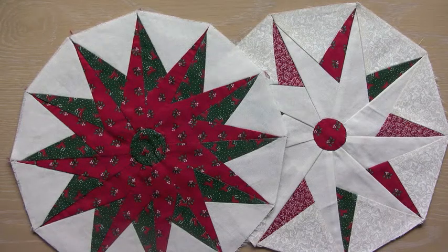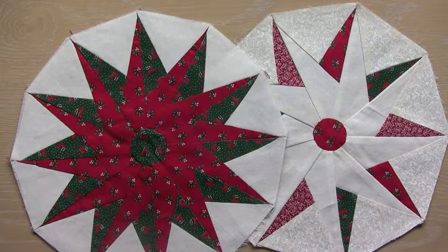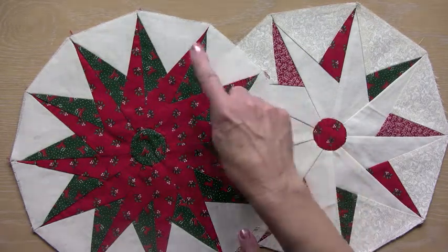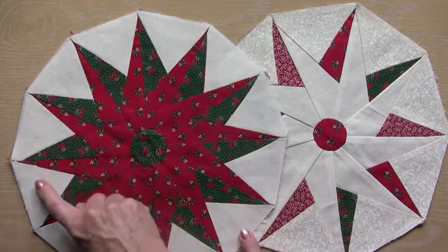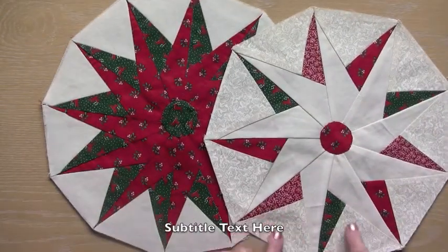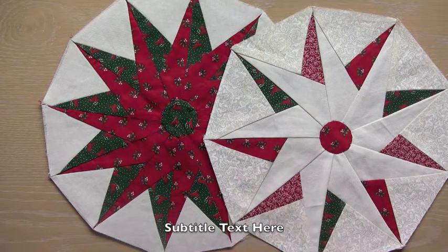Here are lots of patchwork designs which have been made by dividing a circle up into different numbers of sections. This one has got 1, 2, 3, 4, 5, 6, 7, 8, 9, 10, 11, 12 sections and this one has got 1, 2, 3, 4, 5, 6, 7, 8, 9 sections.